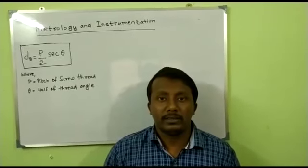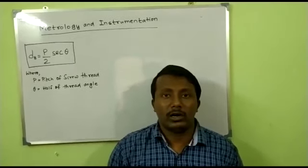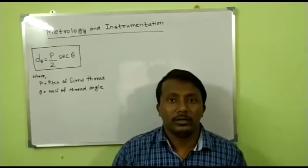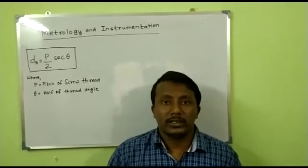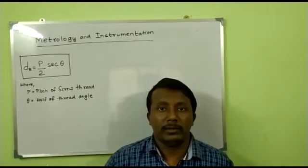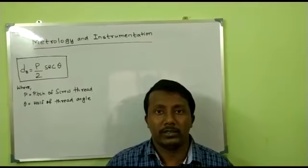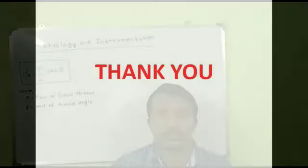Where P is the pitch of the screw thread and theta is equal to half of the thread angle. This is for today's class. In my next class I will be discussing how to measure effective diameter by three wire method.